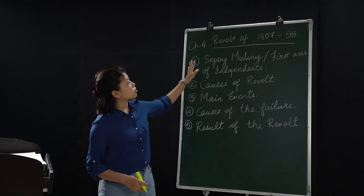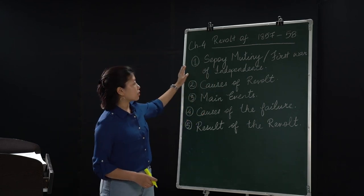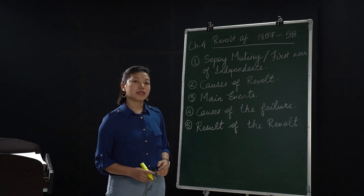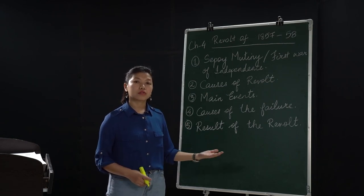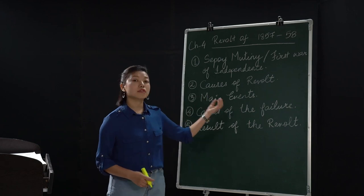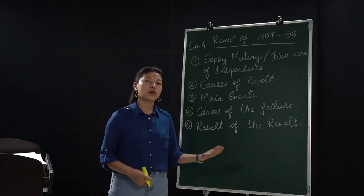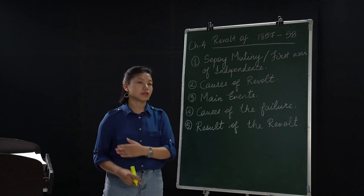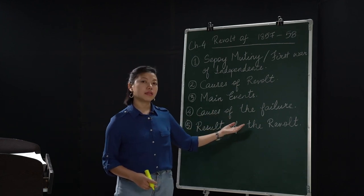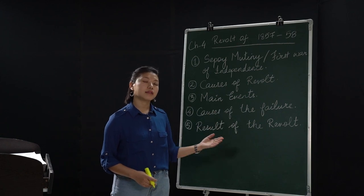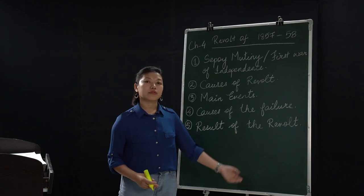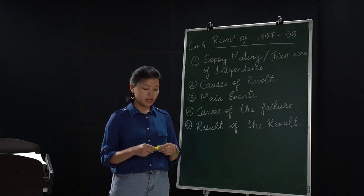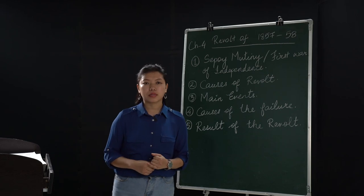So that's all for today. Our topic was the Revolt of 1857 and 1858 — also known as the First War of Independence. We covered certain causes that led to the revolt: political, economic, social, and religious. Then the main events, with great leaders like Tantya Tope, Kunwar Singh, and Rani of Jhansi leading revolts in different parts of India. Then the causes of failure, and finally the results — the revolt became unsuccessful and led to various changes in society. Thank you so much, and we'll see you soon with another topic.